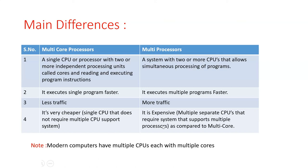Whereas in multi-processor systems there is more bus traffic because each individual processor is connected with all the systems. Another important difference is that multi-core processors are a little cheaper because only one CPU is needed, connected with multiple cores — it does not require multiple CPU supporting systems.